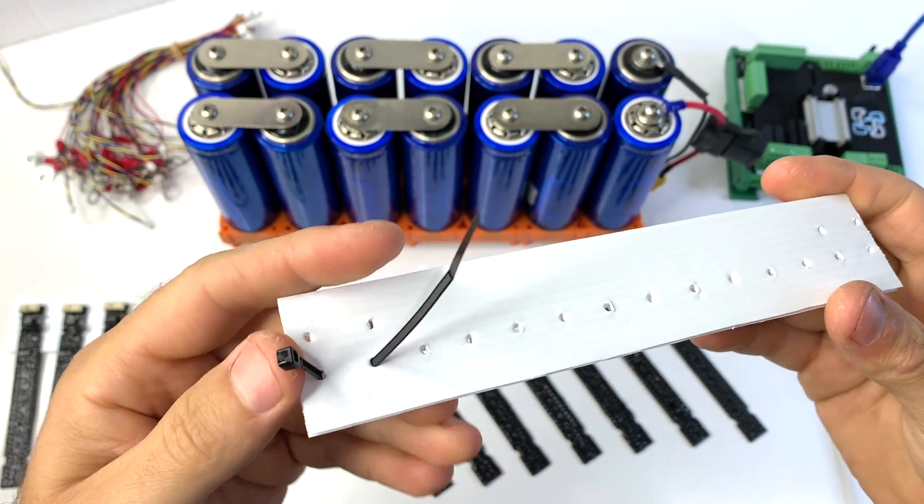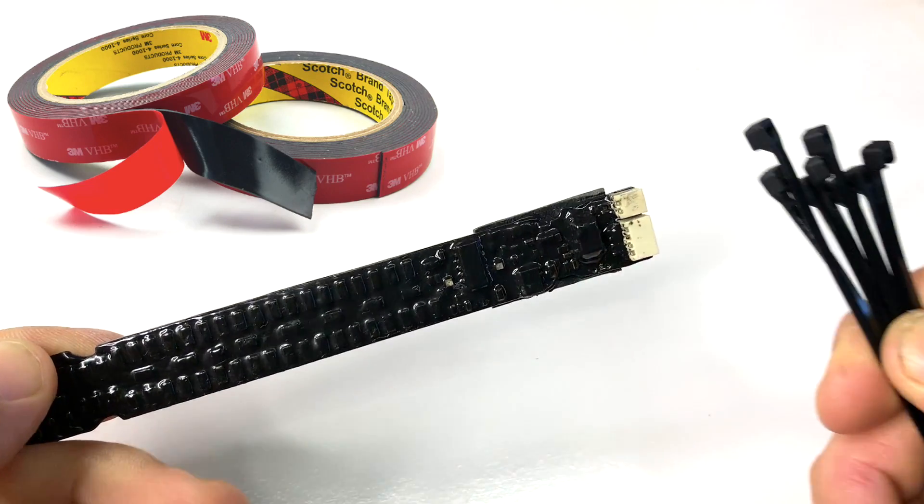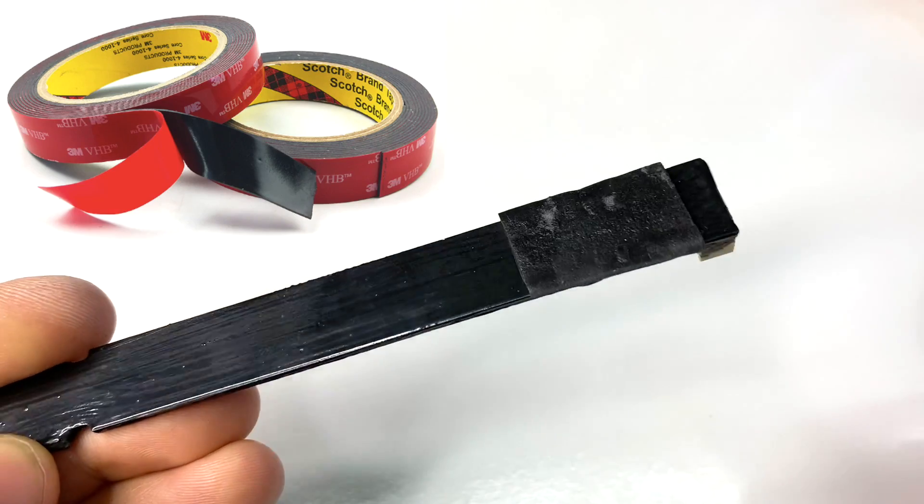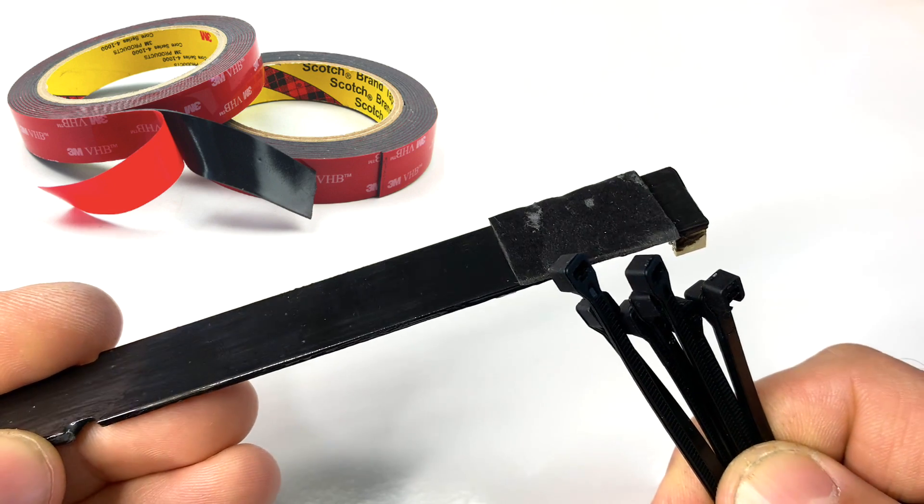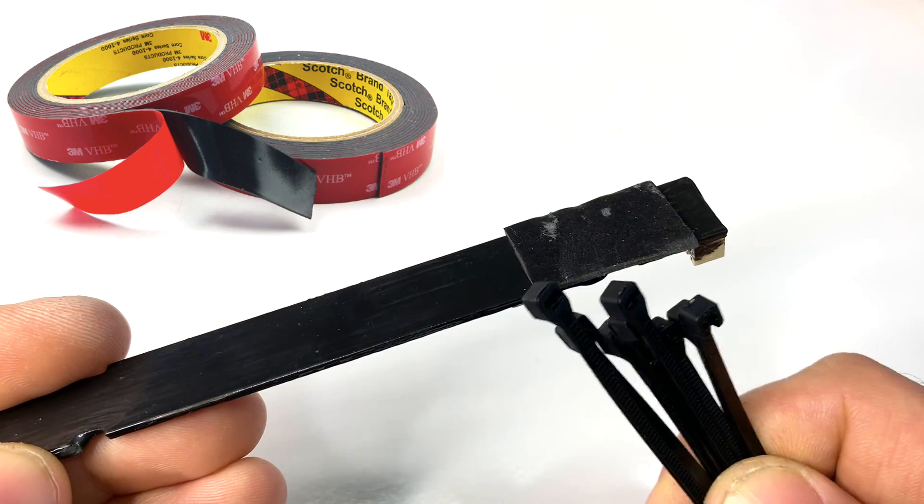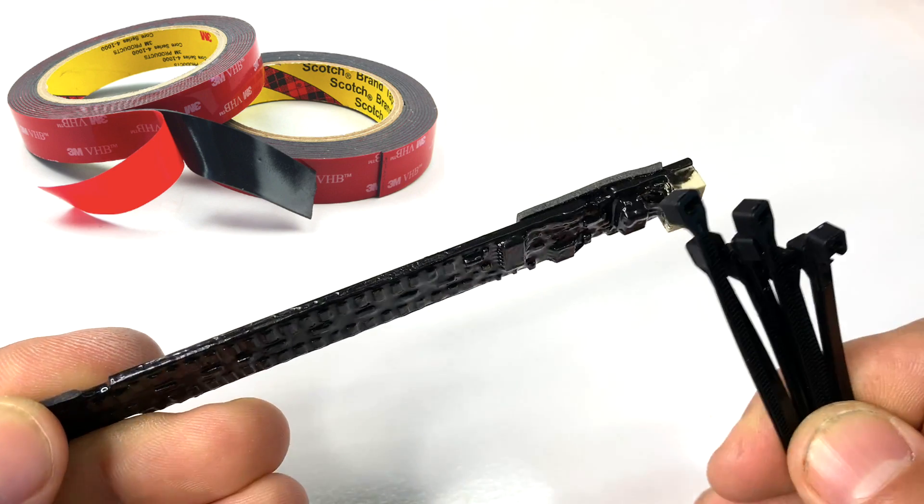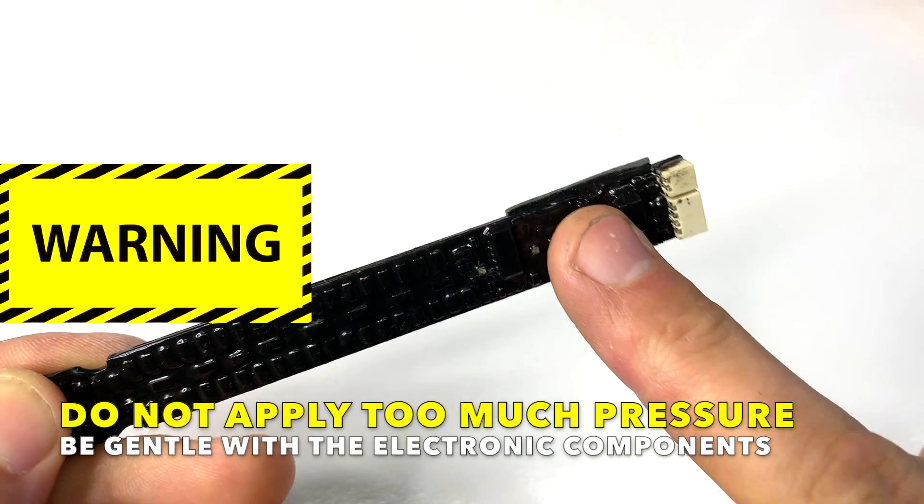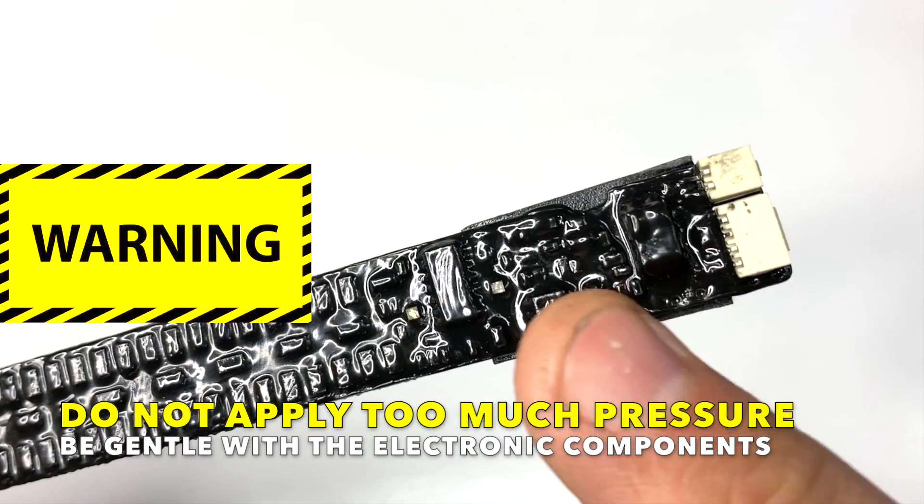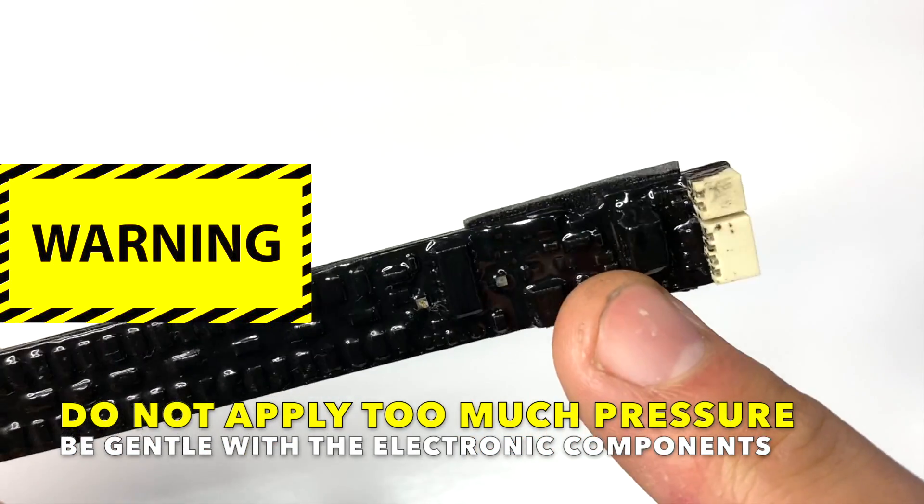Installation is actually very simple. If you don't want to zip tie your cell monitors, you can actually use a double side tape. Try to pick a brand one like a 3M Scotch or something like that. So this is the area where you're going to be applying the tape. And be careful, do not put too much pressure. Remember, you have some electronics underneath the epoxy here, so it's a bit delicate.